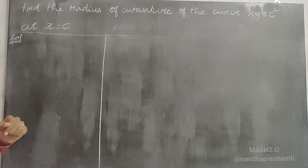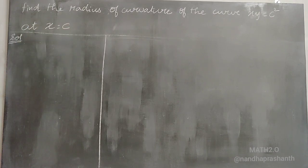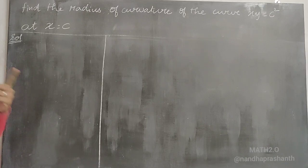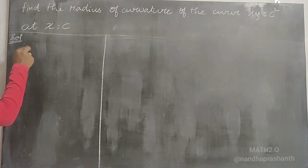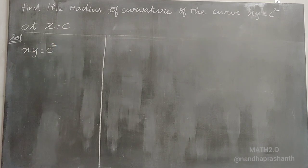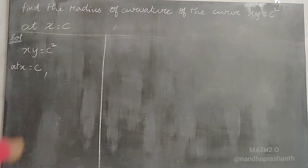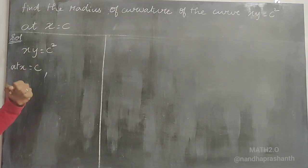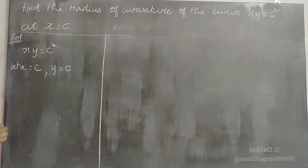We need to find the y-coordinate at this point. The curve is xy = c². At x = c, substituting into the curve: c·y = c², so c cancels and y = c. So the point is (c, c).